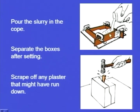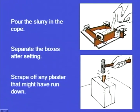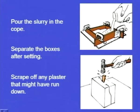We separate the boxes again. After separating, the two boxes joined together will look like this — the pattern is still inside. There is a possibility that a small amount of plaster slurry might have run across the sides; that slurry we have to break off and scrape off using a small hammer and chisel.